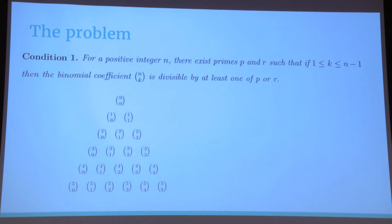But it turns out that Pascal's triangle is a visual representation of binomial coefficients. And when we say the nth row of Pascal's triangle, we're actually referring to the binomial coefficients from n choose 1 until n choose n minus 1. Therefore, the problem we are visualizing with Pascal's triangle can be rephrased in the following way. Condition 1: for a positive integer n, there exists primes p and r, such as all the binomial coefficients from n choose 1 until n choose n minus 1 are divisible by at least 1 of p or r.